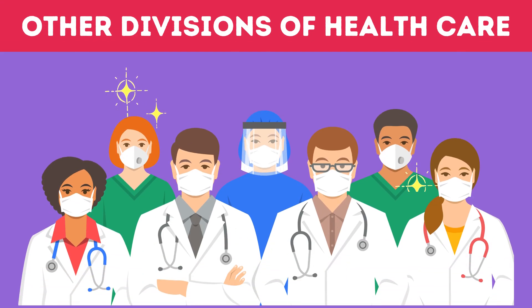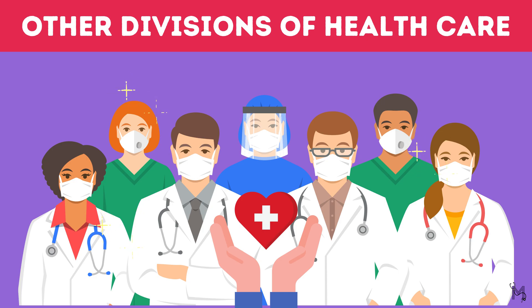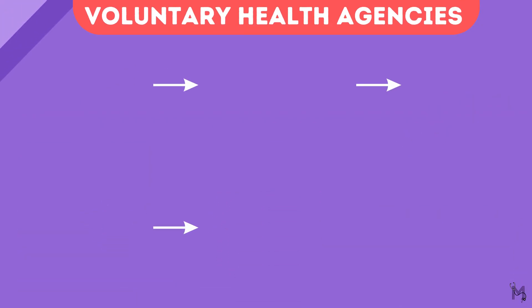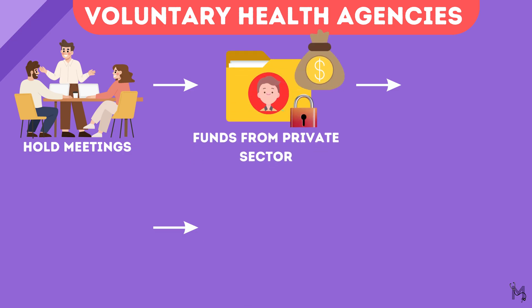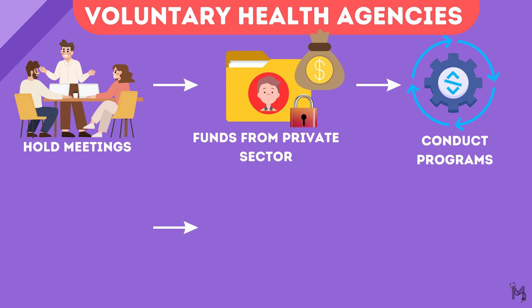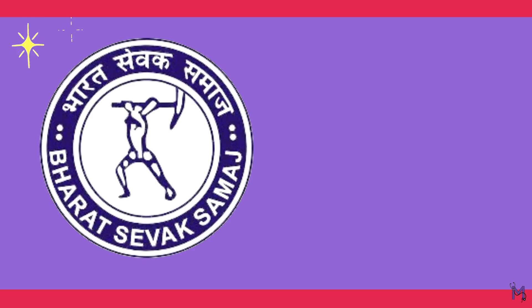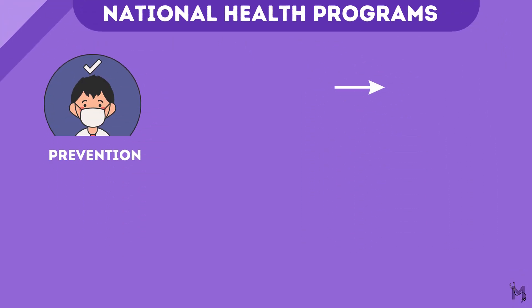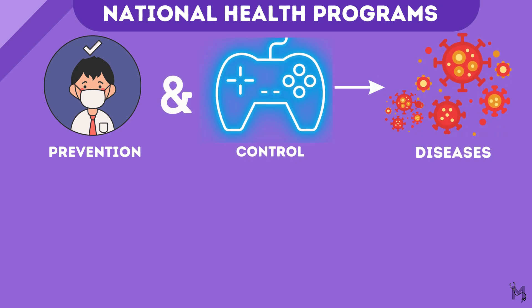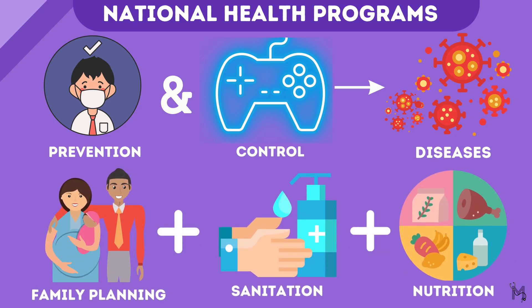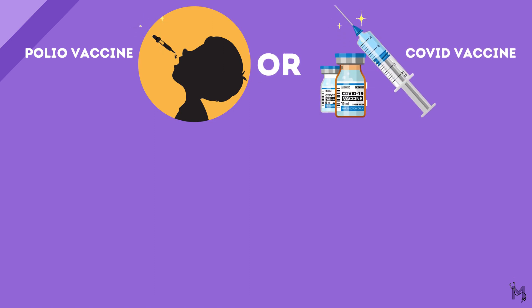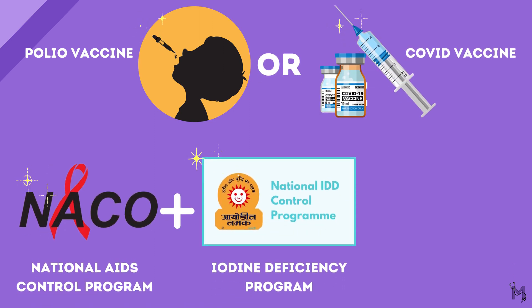Other than the private and public sectors, we also have other divisions of healthcare in our country. We have voluntary health agencies that mainly hold meetings and collect funds for support, mostly from the private sector, and conduct programs which primarily aim at furthering public health by providing healthcare services and educating the public. Such agencies include the Bharat Sevak Samaj and the Kasturba Memorial Fund. The Government of India also launches nationwide health programs focusing on family planning, sanitation, and nutrition — examples include vaccination programs like polio and COVID, the National AIDS Control Program, the iodine deficiency program, and anti-malaria programs.